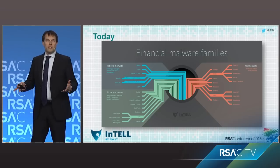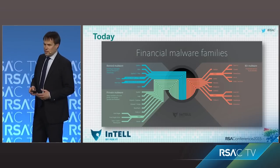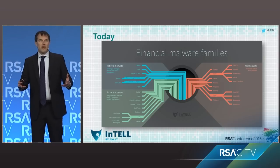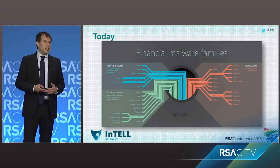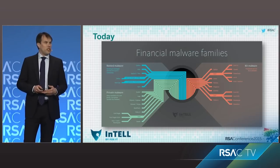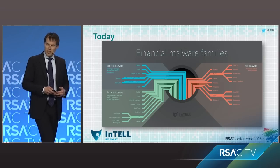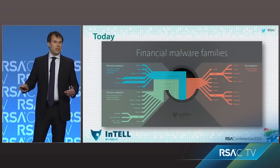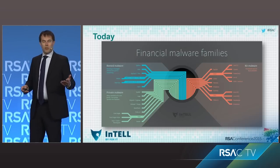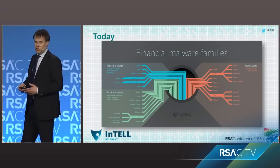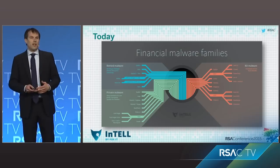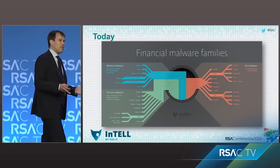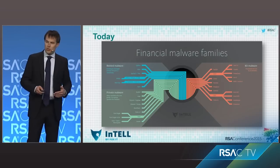And where are we today with banking Trojans? This slide is our attempt at putting together a financial malware family tree divided into three main sections: kit malware, which you buy; malware which you rent as malware as a service; and finally private malware, which is used by the same group that developed it for their own exclusive use.